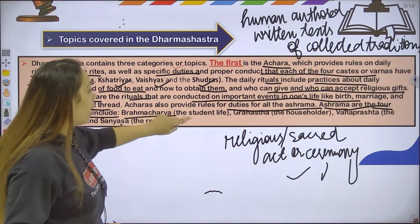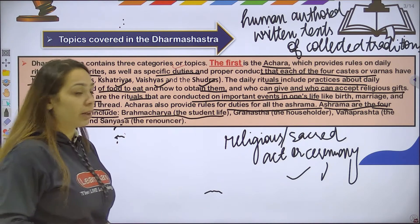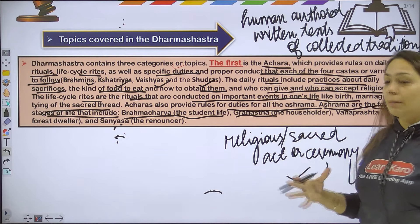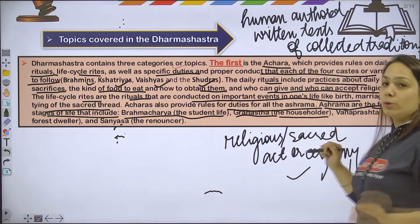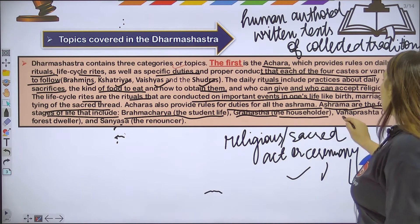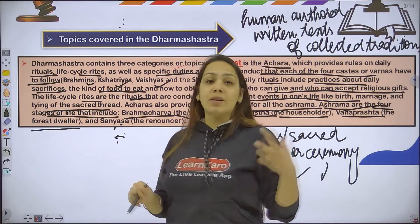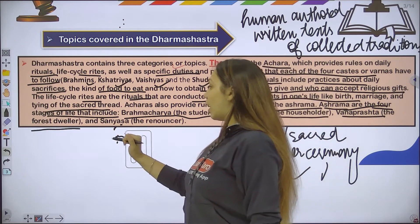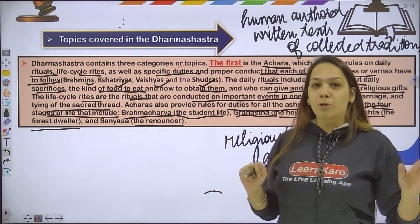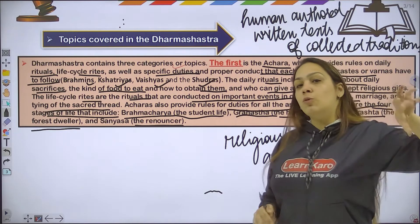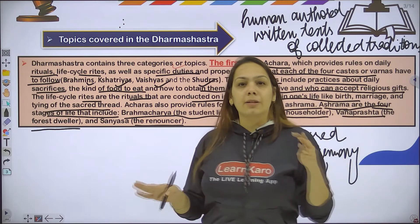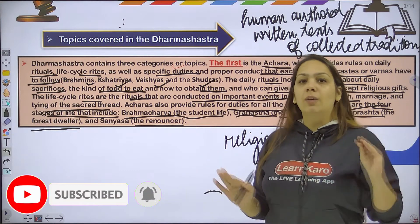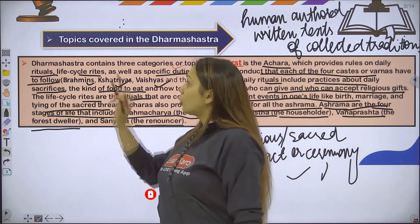The four Ashram stages are: first, Brahmacharya, which is student life. Second, Grihastha, which means householder — somebody who has a family and owns a house. Third, Vanaprastha, the forest dweller who lives in the forest. Fourth, Sanyasi, the renouncer who has given up all worldly pleasures and wants to live a clean, ascetic life.